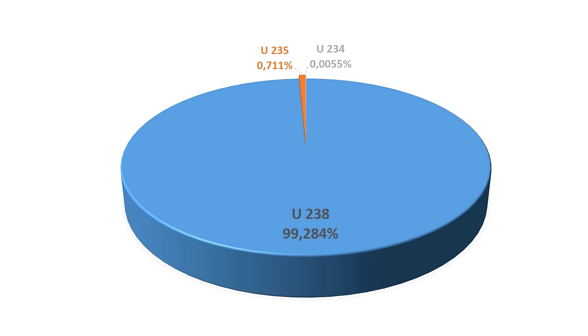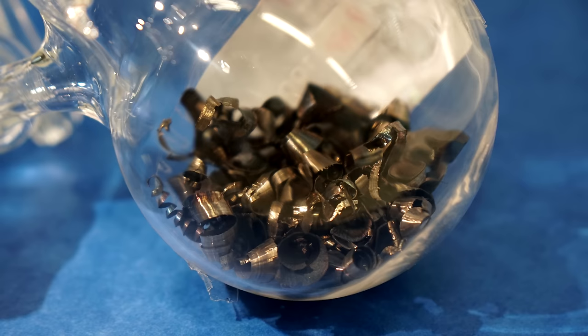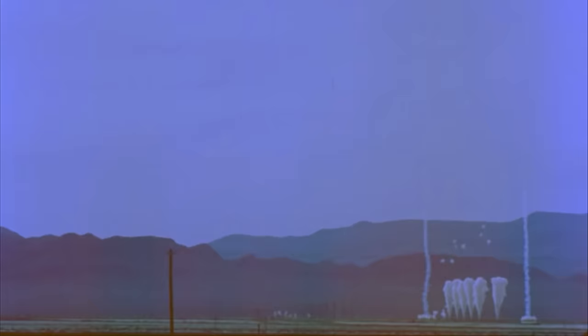It is also worth noting that naturally occurring uranium mostly consists of isotope uranium-238, which cannot divide spontaneously, and is not suitable to be used for making nuclear weapons.